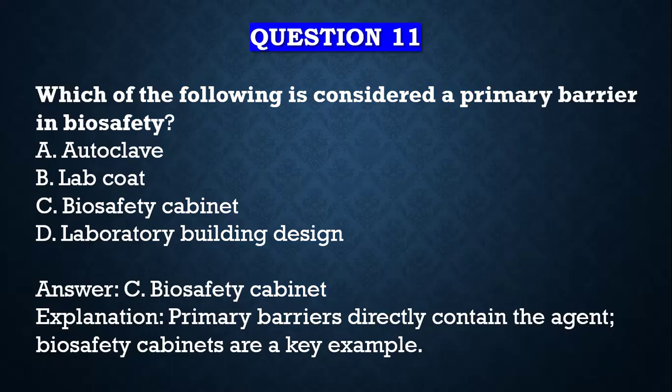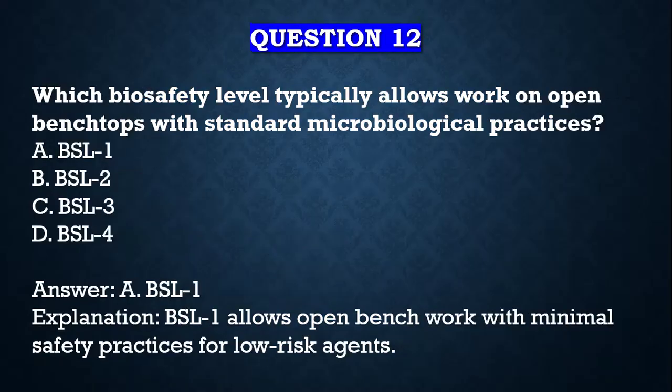Question number eleven: which of the following is considered a primary barrier in biosafety? A) Autoclave, B) Lab coat, C) Biosafety cabinet, D) Laboratory building design. Your answer is biosafety cabinet, because primary barriers directly contain the agent. The biosafety cabinet is an example of a primary barrier because it directly contains the agent.